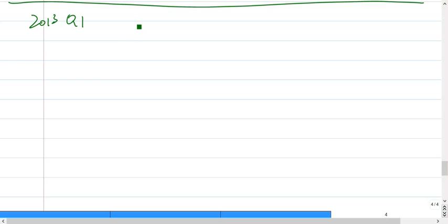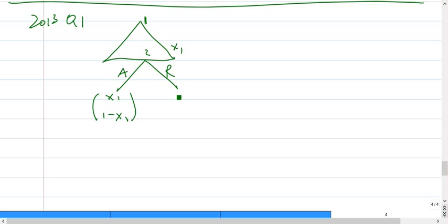The first thing obviously is to draw the tree. Player 1 is offering first and let's call it offer x1, then player 2 is accepting or rejecting. If it's accepted, as usual, we have x1 and 1 minus x1.